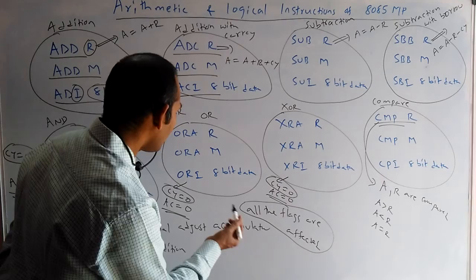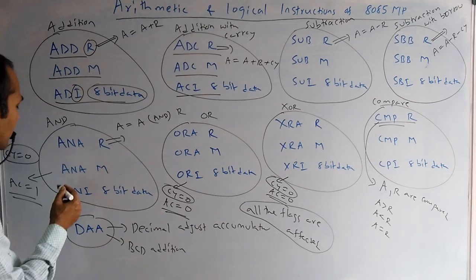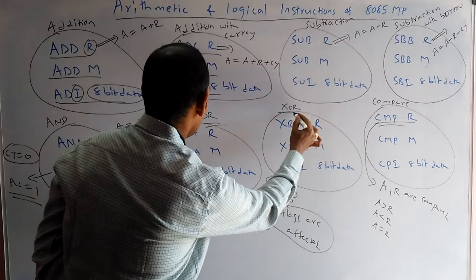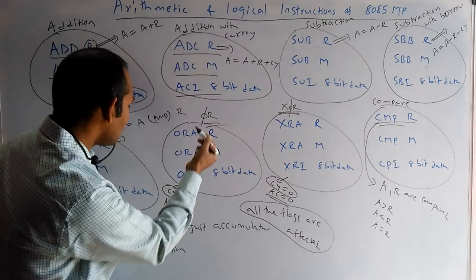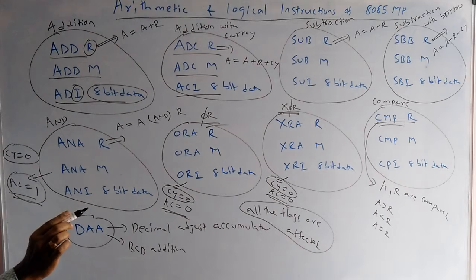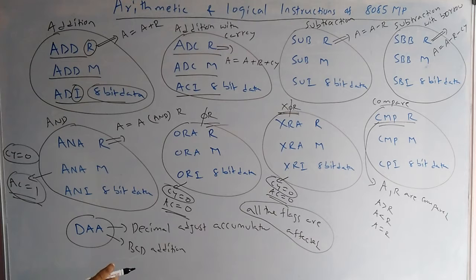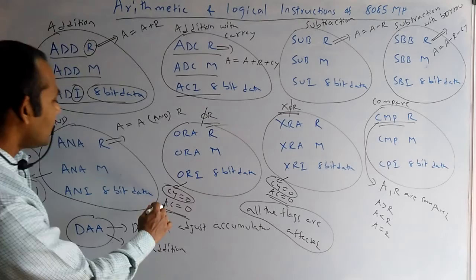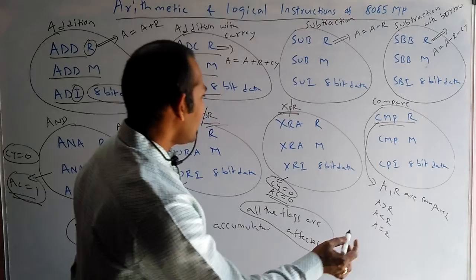One simple technique to remember the AC value: in OR and XOR, the letter 'O' is present — if O is there, AC is zero. You can think 'O' equals zero. If O is not there, AC is one. Like that, we can remember. Whenever you have a doubt, follow this simple approach. Carry is always zero for all three operations, but AC is one for AND and zero for OR and XOR.